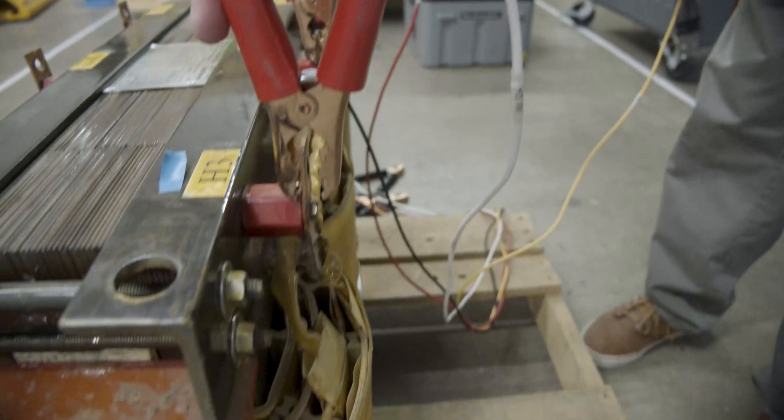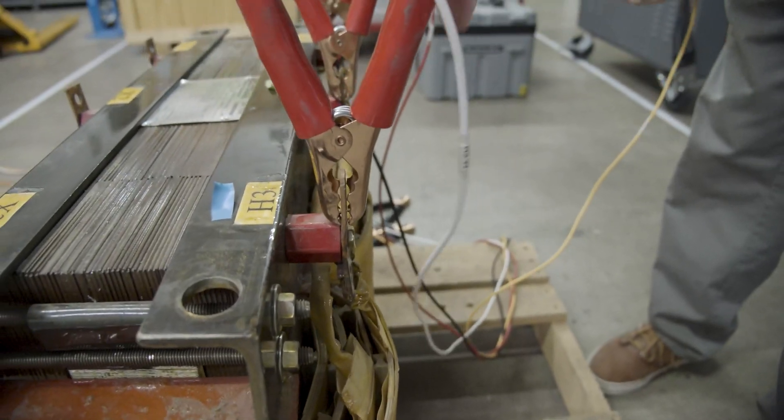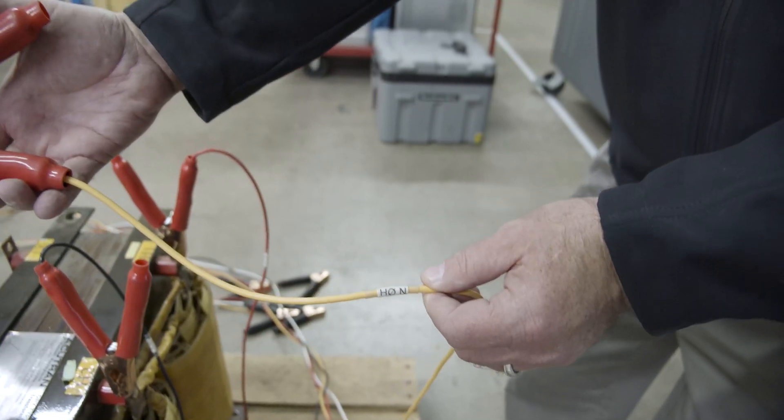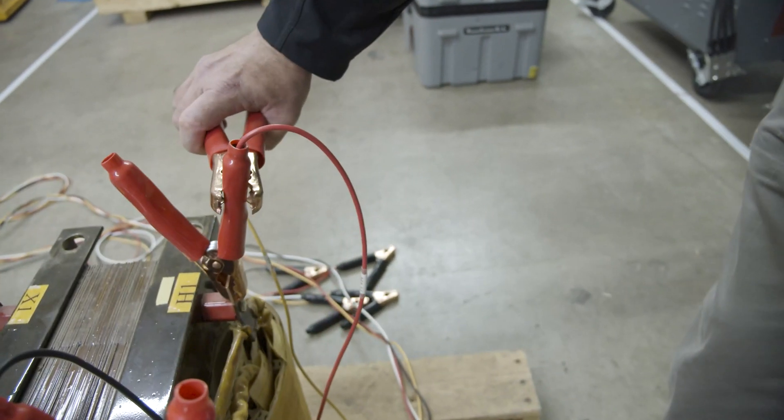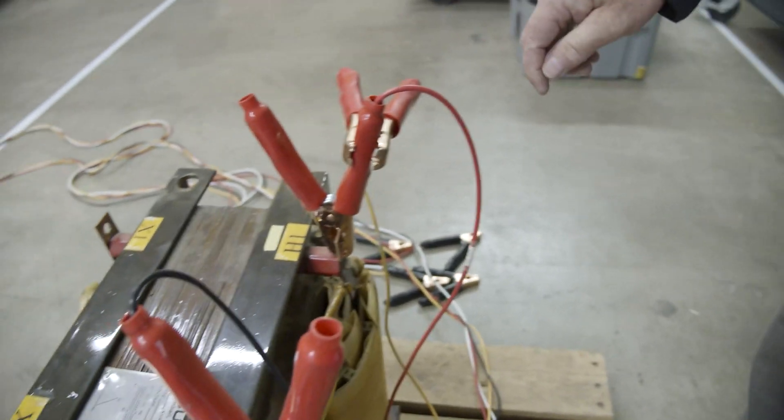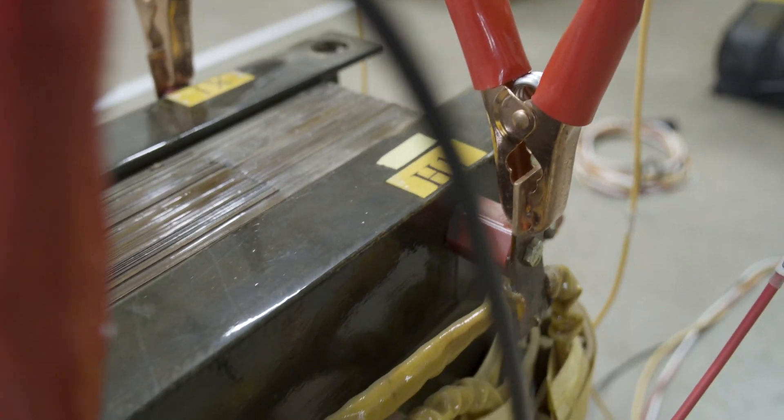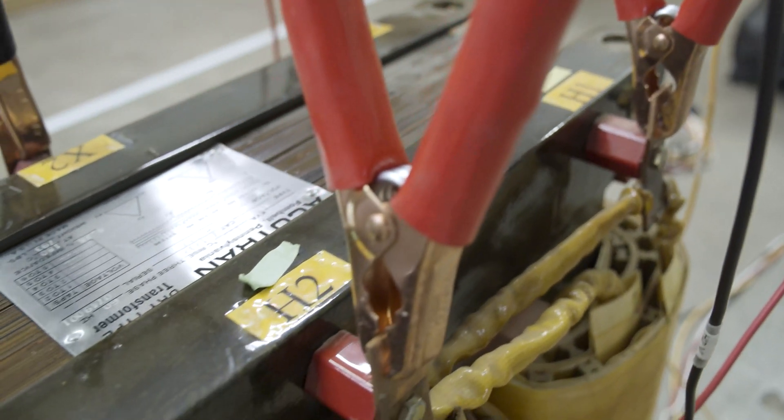Now this is a delta so there is no neutral. Here's the neutral lead, so just to keep it out of the way and everything we're just going to go ahead and clamp it onto the insulation of one of the other terminals. So it has no connection, it's just out of the way.